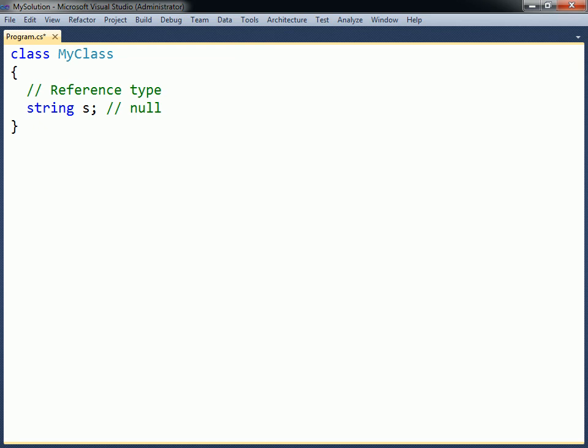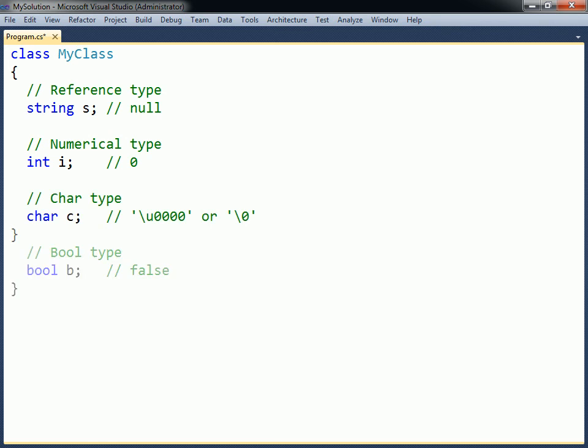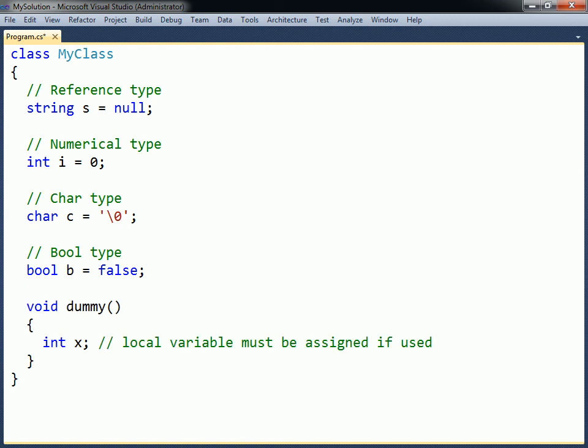For the simple data types the default values are as follows: numerical types become zero, a char has the Unicode character for zero, and a bool is false. Default values will be assigned automatically by the compiler for fields. However, explicitly specifying the default value for fields is considered good programming, since it makes the code easier to understand. For local variables the default values will not be set by the compiler. Instead, the compiler forces the programmer to assign values to any local variables that are used, so as to avoid problems associated with using unassigned variables.